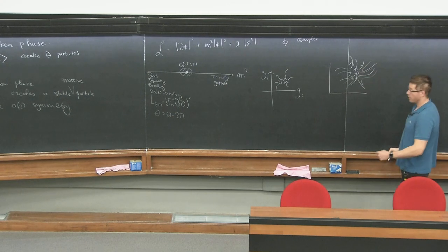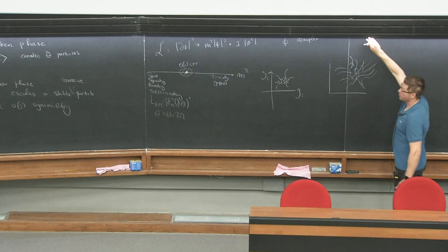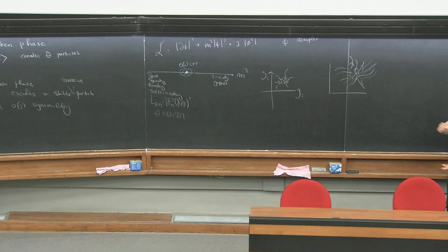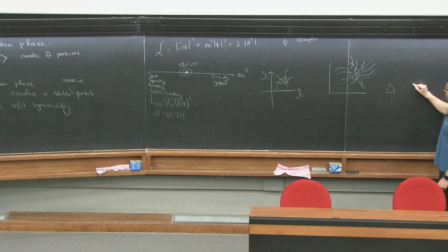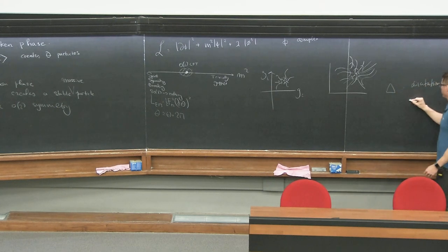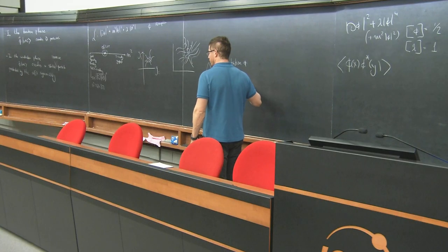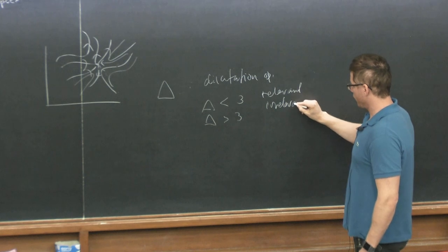One direction will be attractive, namely an irrelevant direction. But one direction will be repulsive, namely a relevant direction. Whether a direction is repulsive or attractive depends on the eigenvalues of the scaling operator of the conformal field theory — the dilatation operator. To understand if some operator is relevant or not, you just compare its dimension with three. If it's smaller than three, it's relevant. If it's bigger than three, it's irrelevant.